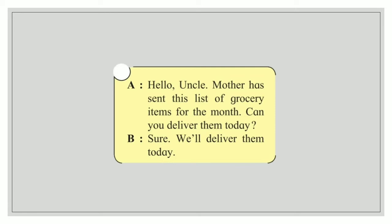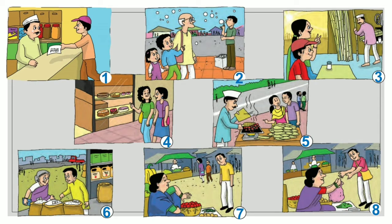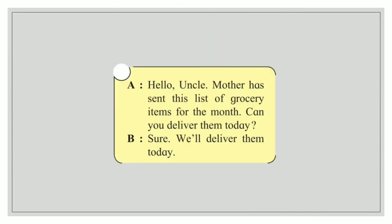Let us match this conversation to the pictures. See picture number 1 — there is a boy giving something like a list to the shopkeeper. So this conversation is related to picture number 1. We will write number 1 here.